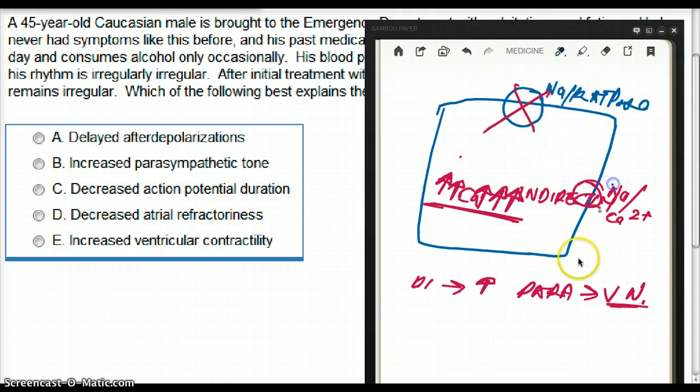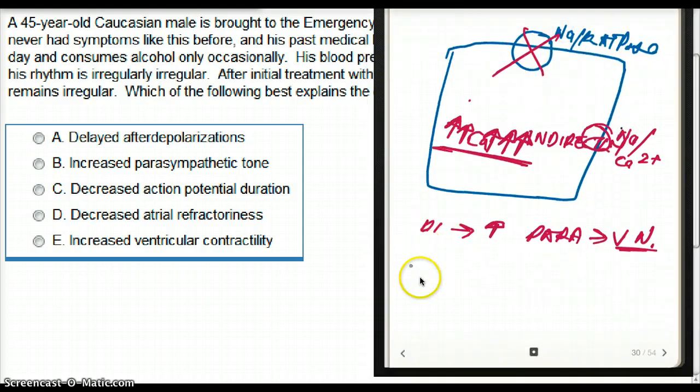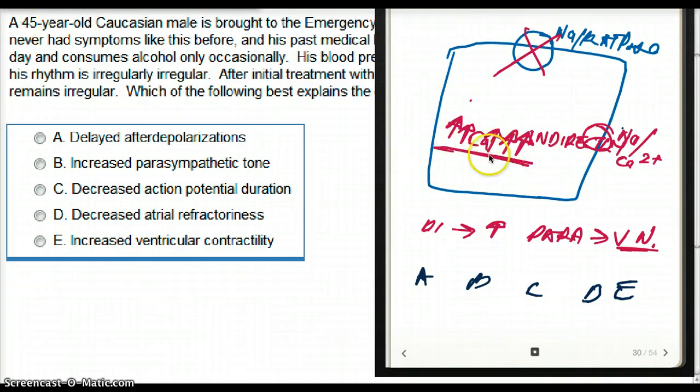Okay, so that's a general overview. Now let's look at the options. So there is A, B, C, D, and E. Let's see which one it is. A says delayed after depolarization. Now there is delayed after depolarization in digoxin.